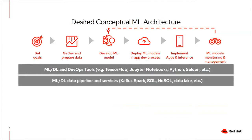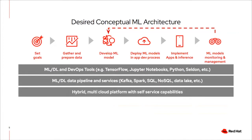The next layer is the data pipeline and data services, because data is one of the key components of the architecture. You need a pipeline and a data management strategy. Technologies like Kafka and Spark are used here. Data can live in a SQL database, a NoSQL database, or a data lake. You need a data pipeline and data management strategy in place, plus tools and access to data services for your personas. To run all these toolchains, you need a hybrid multi-cloud platform with self-service capabilities, so that data scientists, data engineers, and app developers don't have a daily dependency on IT to fulfill provisioning requests.